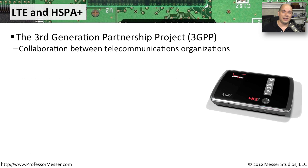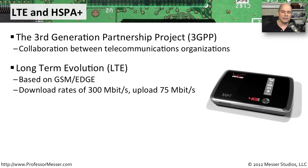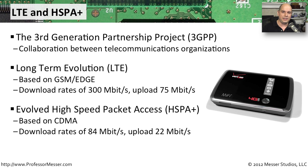Mobile companies have upgraded to technologies like LTE and HSPA+, developed through the Third Generation Partnership Project (3GPP), where telecommunications companies collaborated on a common way to send data. LTE — Long-Term Evolution — is based on GSM/EDGE networks, with theoretical maximums of around 300 megabits per second download and 75 megabits per second upload. HSPA+, based on CDMA technologies, offers theoretical maximums of about 84 megabits per second download and 22 megabits upload. In practice you generally get much slower throughput, but still very high speeds for mobile use.